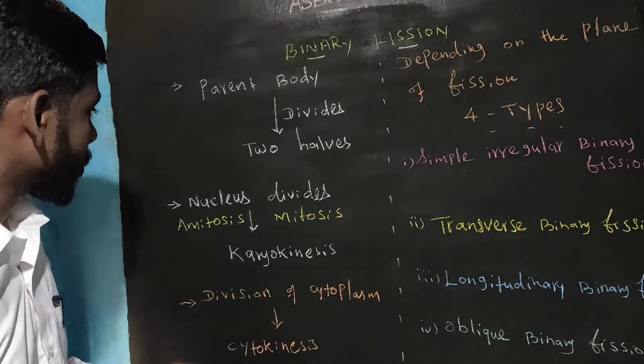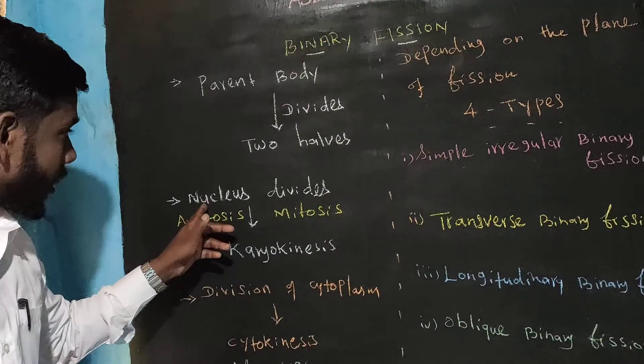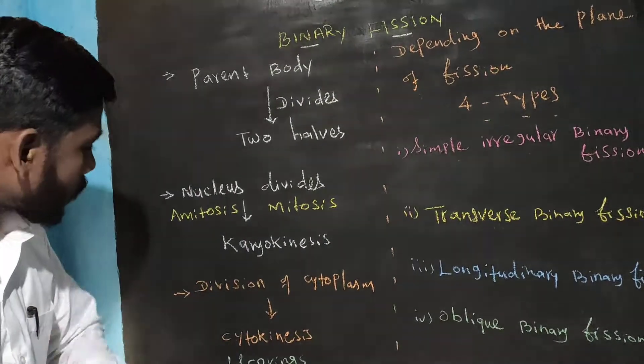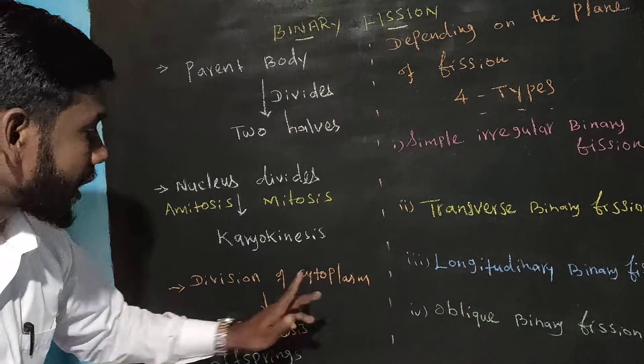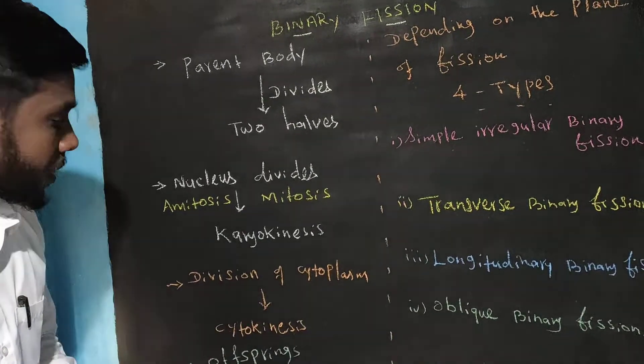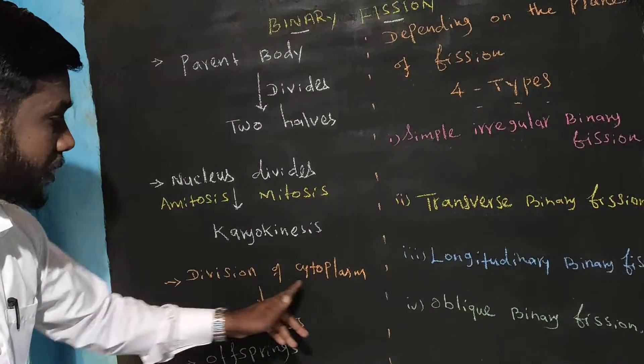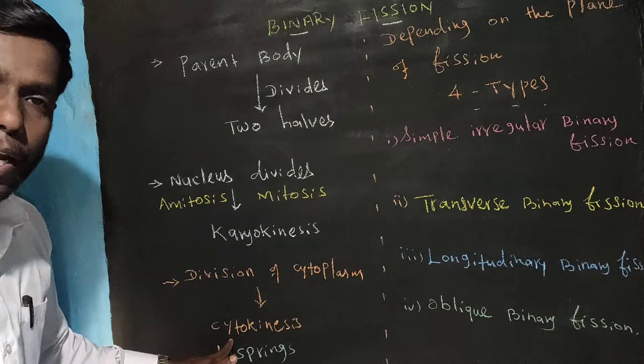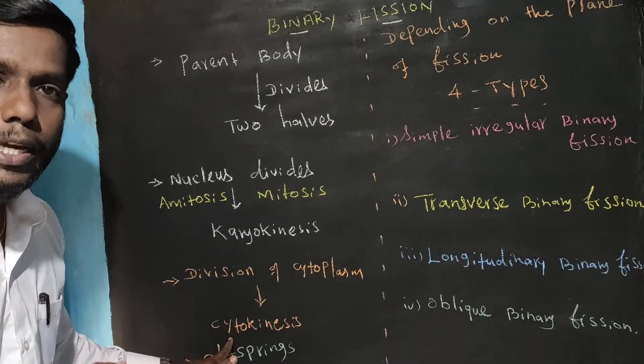Following nucleus division, the cytoplasm also divides. When the cytoplasm divides, that process is called cytokinesis. Cyto refers to cytoplasm.